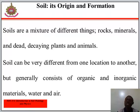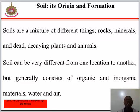Soil: its origins and formation. Soils are a mixture of different things — rocks, minerals, and decaying plants and animals. Soil can be very different from one location to another but generally consists of organic and inorganic materials, water and air. The inorganic materials are the rocks that have been broken down into smaller pieces, while the organic material is decaying living matter — plants or animals that have died and decayed until they become part of the soil.